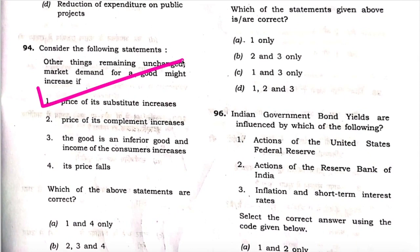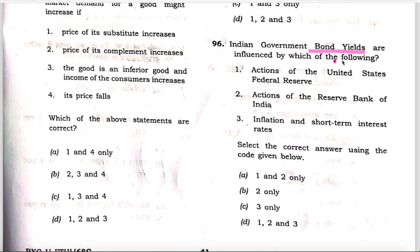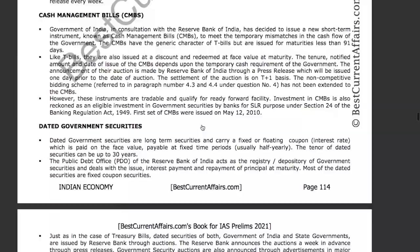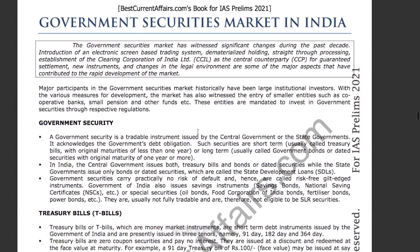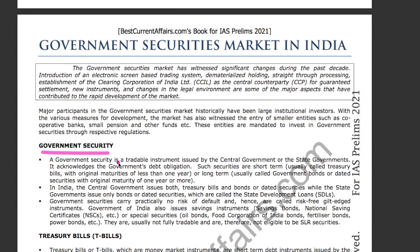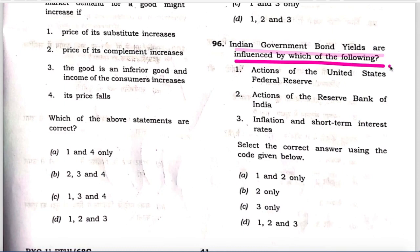Next question: With regard to Indian government bond yields, they are influenced by which of the following? Three factors are given. Let's first understand Indian government bonds. This is our Indian economy book for IAS Prelims 2021, page number 114. Government security is a tradable instrument issued by central or state government. Short-term securities are called treasury bills, and long-term securities are called government bonds. The factors are: actions of the US Federal Reserve, actions of the RBI, and inflation and short-term interest rates. All three factors are correct.